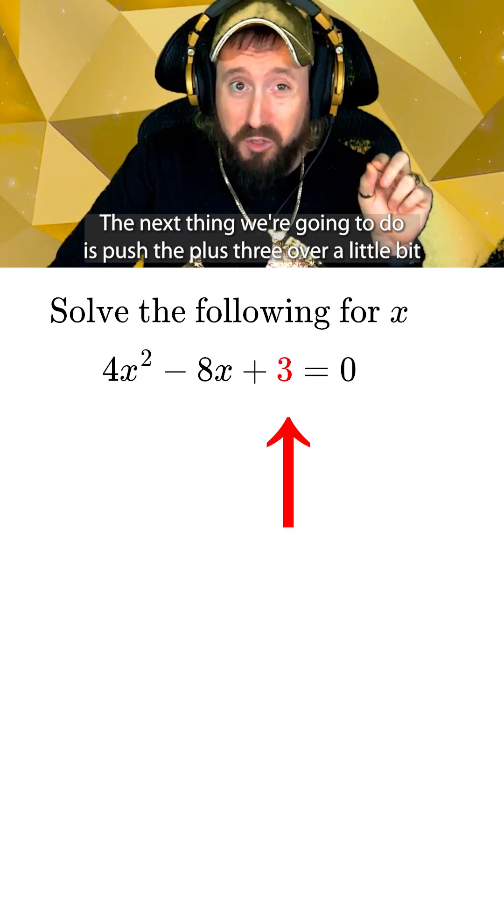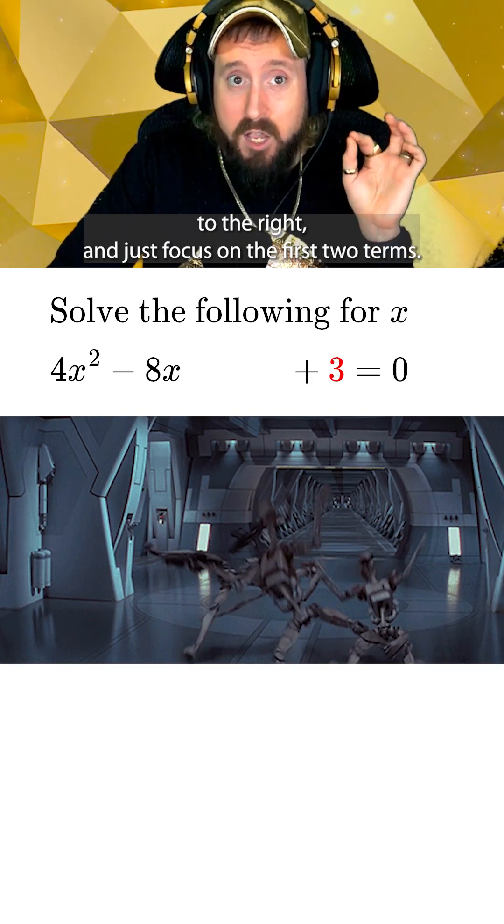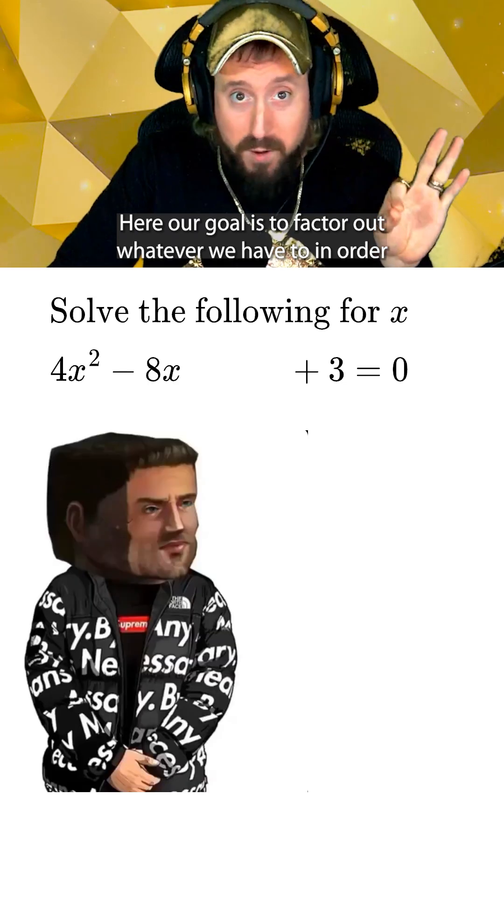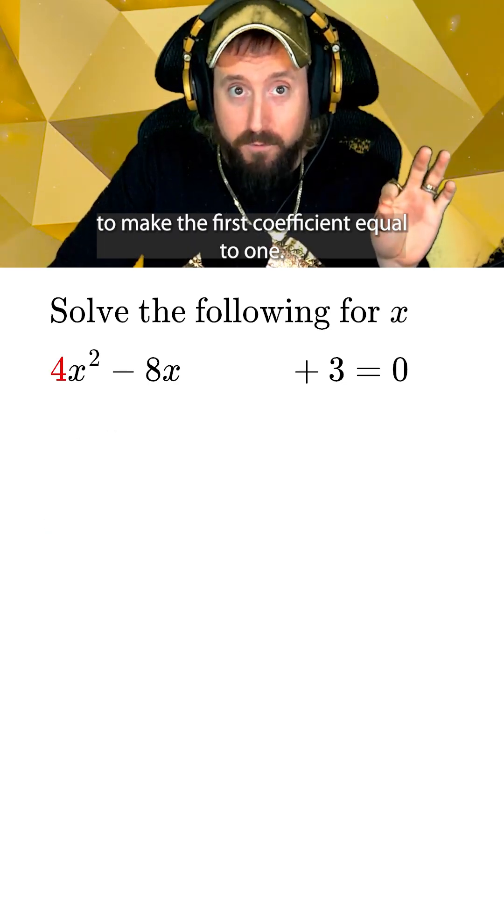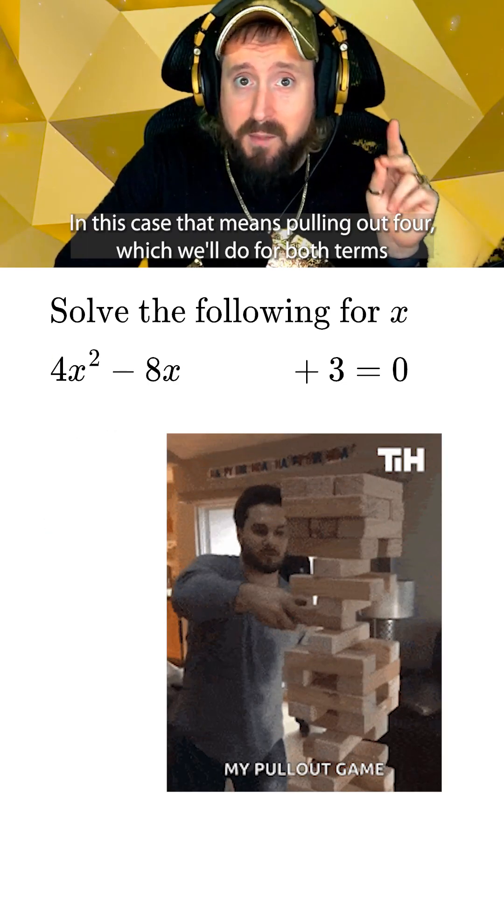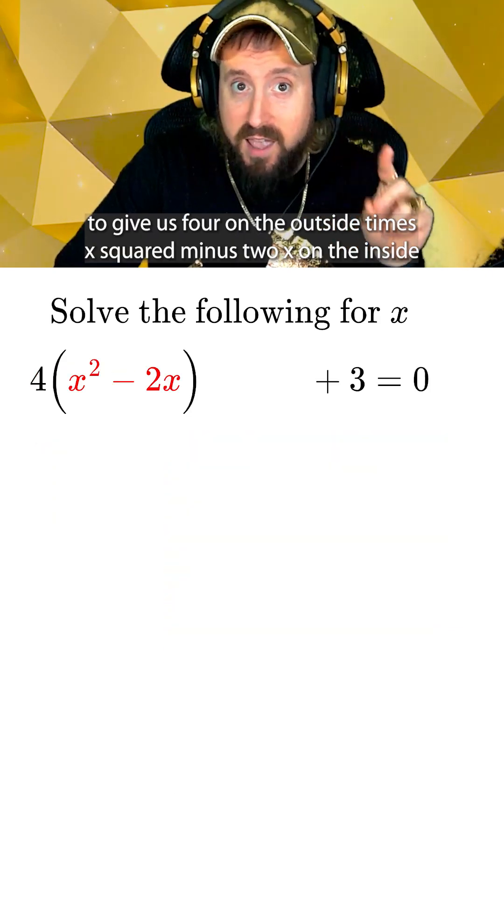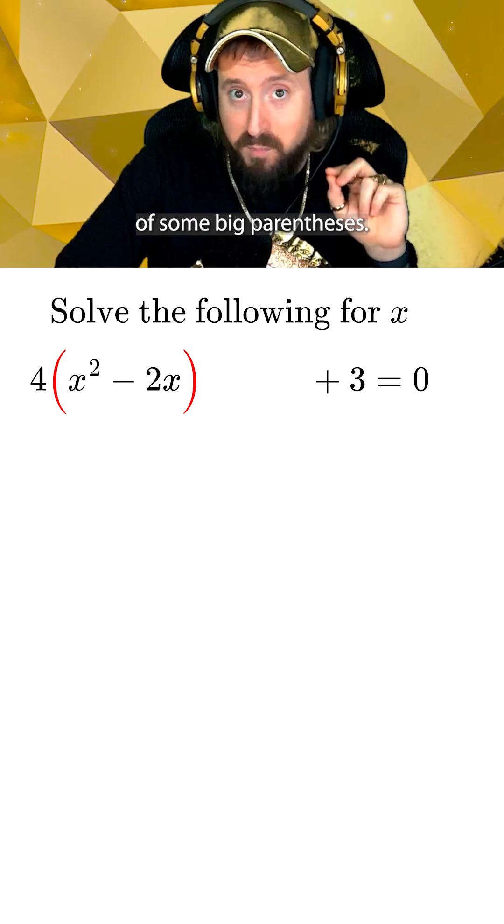The next thing we're going to do is push the plus 3 over a little bit to the right and just focus on the first two terms. Here our goal is to factor out whatever we have to in order to make the first coefficient equal to 1. In this case, that means pulling out 4, which we'll do for both terms to give us 4 on the outside times x squared minus 2x on the inside of some big parentheses.